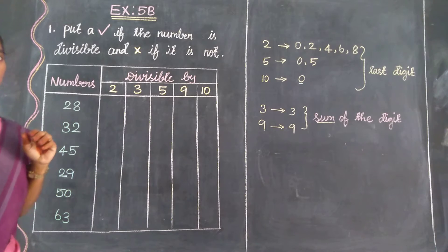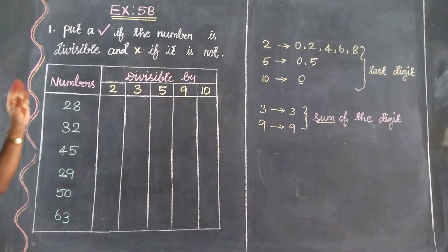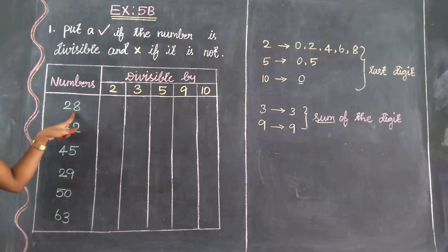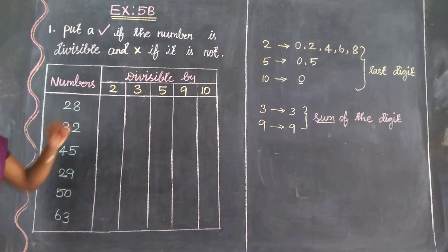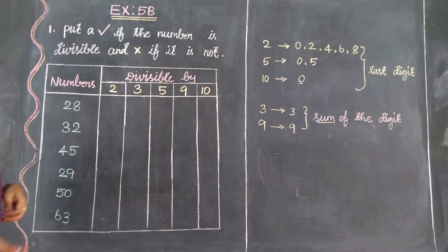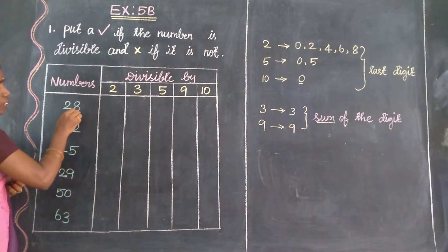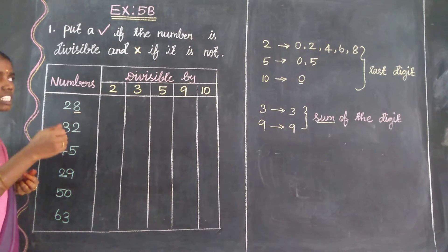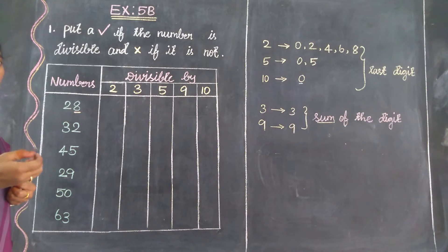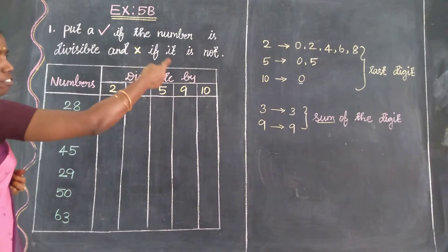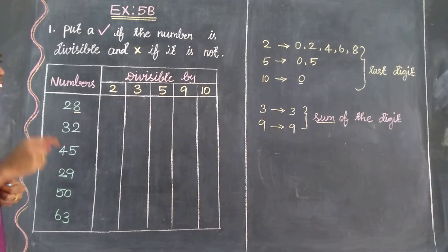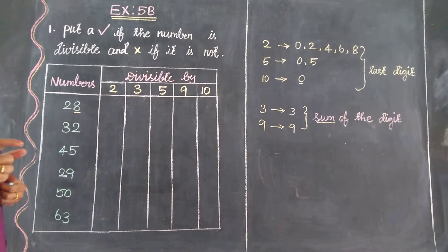Follow the same rule. The rules are: for 2, 5, and 10 — check the last digit only. For 3 and 9 — find the sum of the digits.